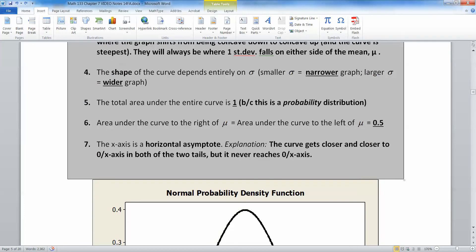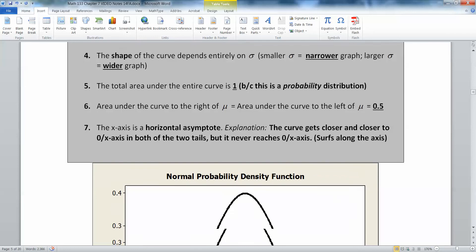There we go. The curve gets closer and closer to 0, which would be where the x-axis is, in both of the tails, but it never reaches 0, i.e. the x-axis. You can think of it as kind of surfing along the axis, right? It surfs along the axis. I'd be very Hawaiian about it.